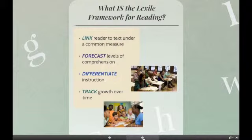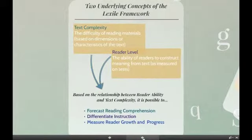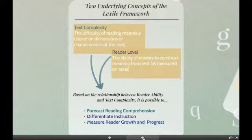Because the scale is developmental and not based on grade level, one is able to track progress and growth over time, within a year and from year to year. The Lexile Framework is used to measure two separate constructs: text readability or complexity, and reader level. Text complexity is the difficulty of reading material based on characteristics of the text — how difficult a particular text is for a given reader to comprehend. Reader level is the ability of readers to construct meaning from text as measured on tests and assessments. Based on the relationship between reader ability and text complexity, it is possible to forecast reading comprehension, differentiate instruction, and measure reader growth and progress.